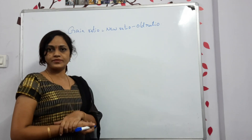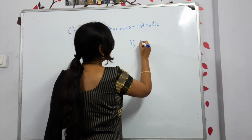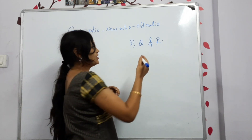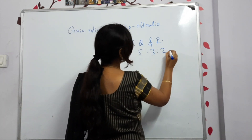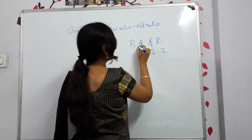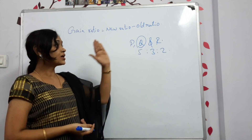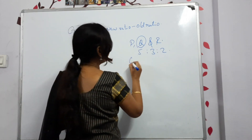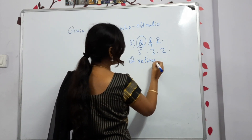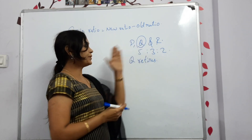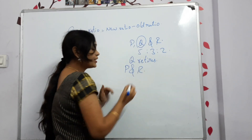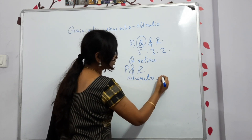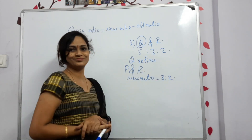Let us take three partners: P, Q, and R. They were sharing profits in the ratio of 5:3:2. Q is retiring. After Q's retirement, the remaining partners P and R have a new ratio of 3:2.